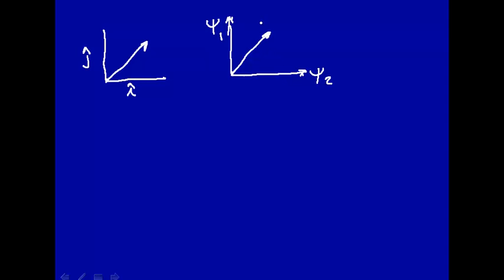The state of a system could be represented by a vector in this two-dimensional plane. In other words, the state of a system psi can be represented as a linear combination. Although usually a system has an infinite number of eigenfunctions, if it has two, then any state of the system can be represented as a linear combination of eigenfunction 1 plus eigenfunction 2.